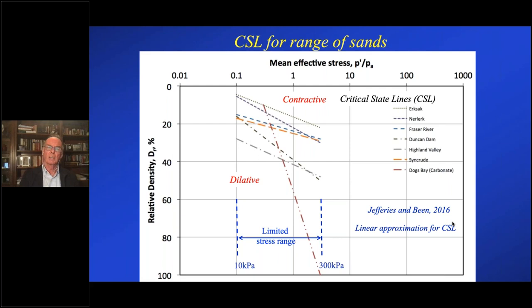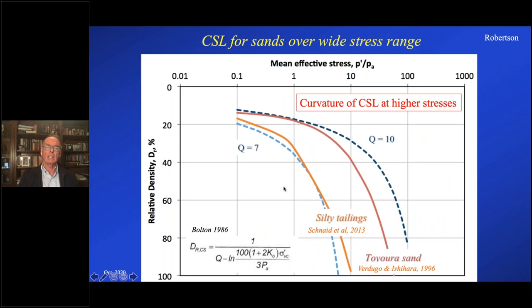Jefferies and Bean in their book showed a lot of examples of the critical state line. Here I've taken a few of them — the only difference is instead of plotting against void ratio, I plotted against relative density. So for these sands, they gave Emax and Emin values so you could calculate the relative density, and you see the family of them. Jefferies and Bean tended to assume a linear critical state line, looking at a relatively limited stress range — that was a reasonable assumption. By sticking to relative density, I can show what the critical state line looks like if you test sands out to much higher stresses. The horizontal scale is mean effective stress normalized by atmospheric pressure: one is 100 kPa, ten is 1000 kPa.